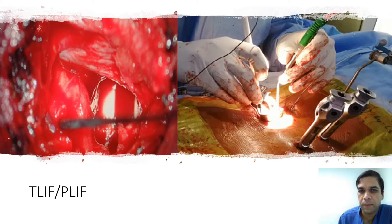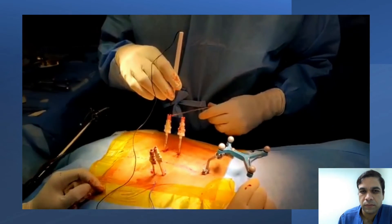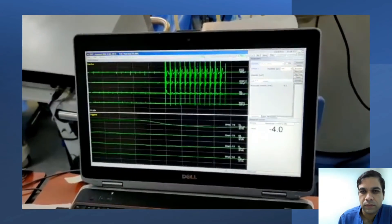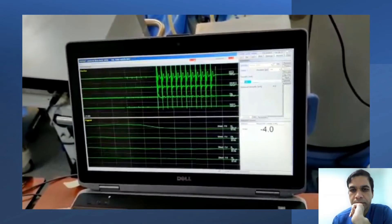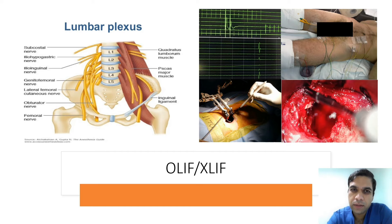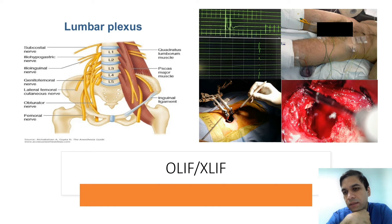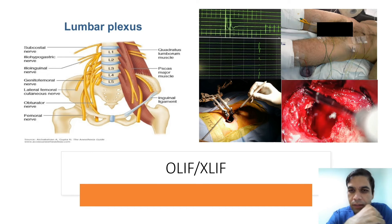During minimally invasive lumbar fusion surgeries we also do neuromonitoring. We stimulate at 7 mA — if signals are not coming it is a good tract. A ball-tipped probe is inserted through the tract and I take a cutoff of 7 mA — if a signal is generated below that, it means the tract is very close to the nerve root or there is a medial breach. The surgeon will then remove the needle and redirect the tract. This is how navigation-guided screw placement is done, checking electrophysiological confirmation at every stage.